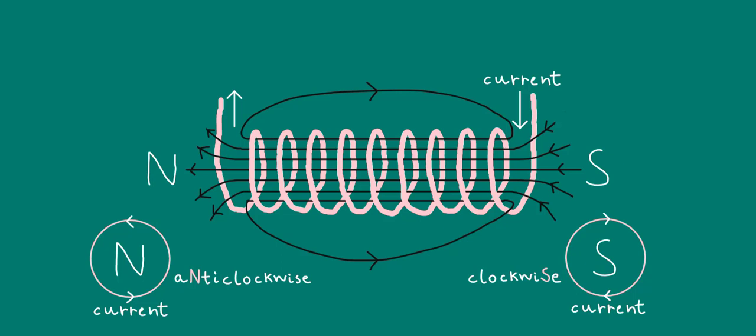So, to summarize, if the current flows anti-clockwise when you look face-on at the end of a solenoid, then you know that that end will be a north pole. On the other hand, if the current appears to be flowing clockwise, then you know that that end will be a south pole.